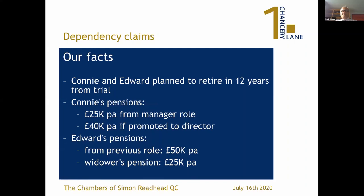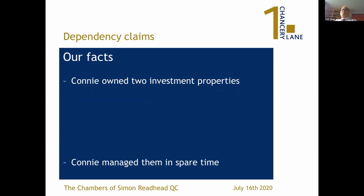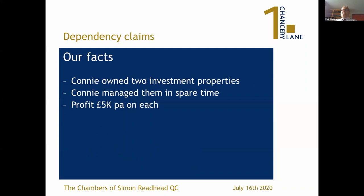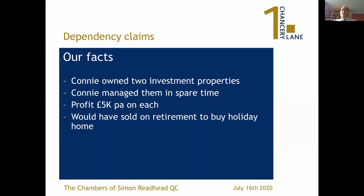In terms of pensions, Connie would have got about £25,000 per annum from her manager role, and if she had been promoted to director from the final salary scheme her firm operated, that figure would have been higher. Edward gets a £50,000 per year pension from his previous role and now receives a widow's pension from Connie's company pension fund of £25,000 per annum. All net figures.